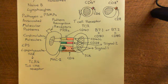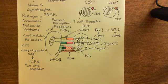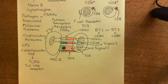The antigen-presenting cell breaks down the pathogen, including all of its antigens, and presents fragments of the antigens on its surface complexed with the major histocompatibility complex class 2.